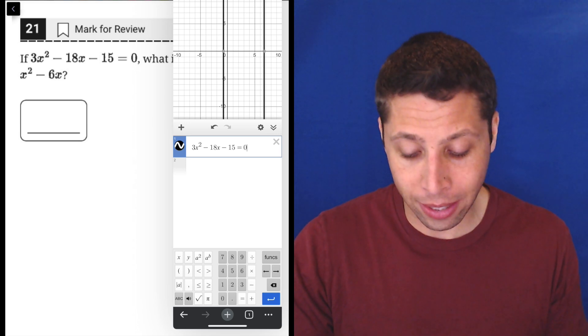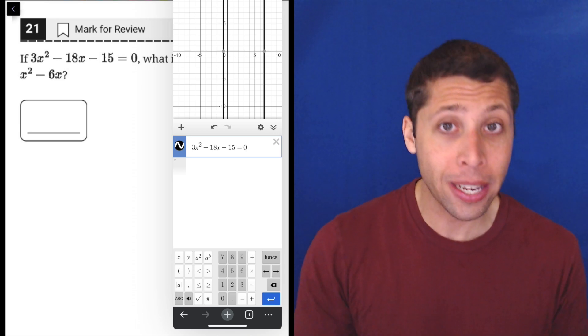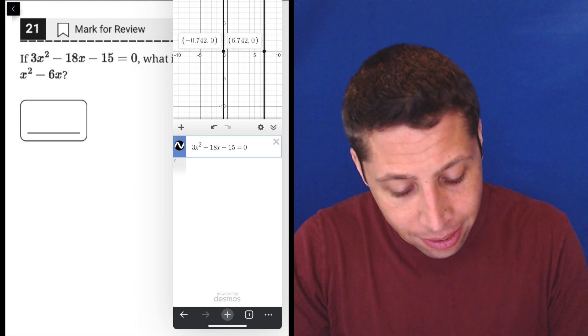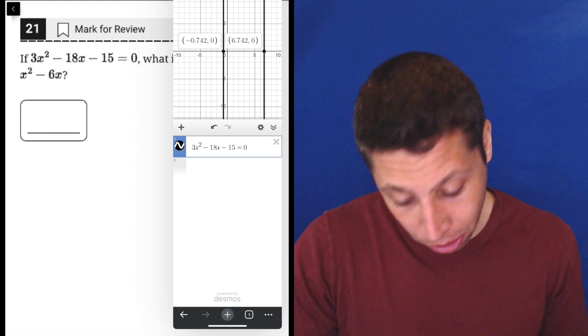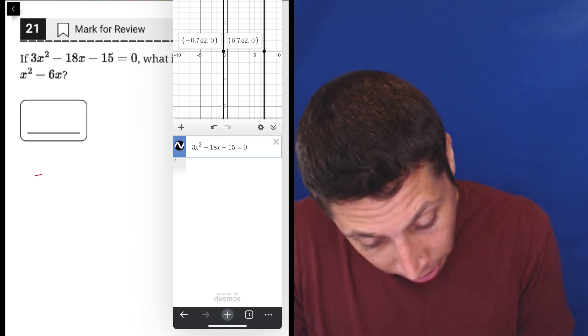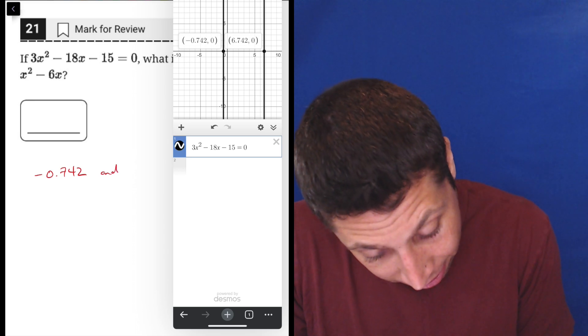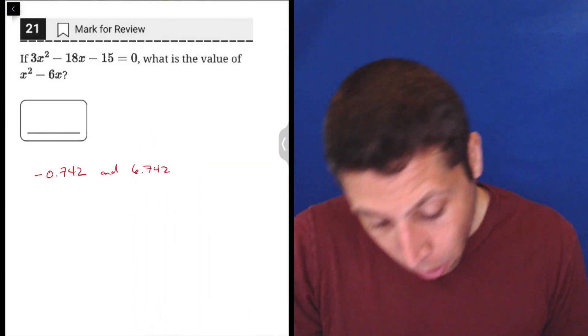You can see basically what it's doing is very similar to what it did on question 20 if you watch that video. It's giving me two vertical lines that go straight up and down, and where those lines cross the x-axis are the values of x. In this case they're kind of messy numbers, so they are -0.742 and positive 6.742.